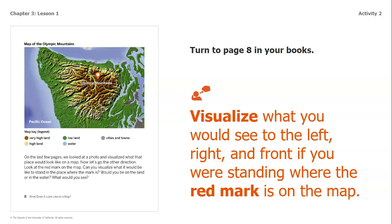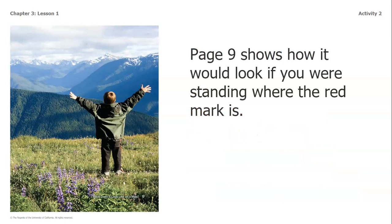Would you be on the land or in the water? What would you see? I want you guys to take a second to think about — if you were standing there, what would you see? Page nine shows how it would look if you were standing where the red mark is. You can see that you're overlooking from pretty high up, not seeing a bunch of water, but you are seeing some more of those mountain peaks.